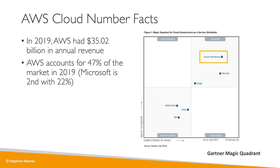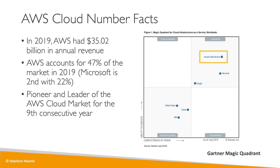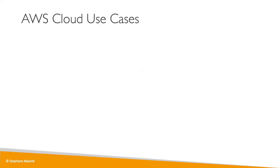AWS accounted for 47 percent of the market in 2019, with Microsoft being second at 22 percent. So by learning AWS you are learning a tool that is widely used — it is a pioneer and leader of the cloud market for the ninth consecutive year, and it has over 1 million active users.